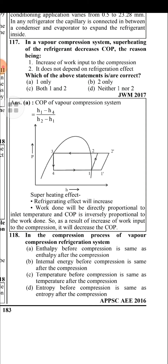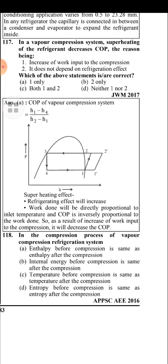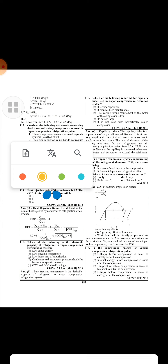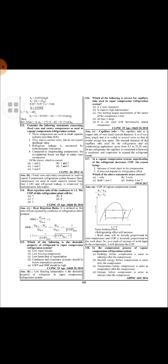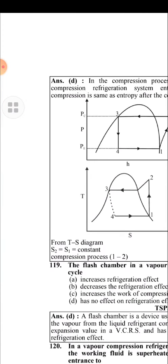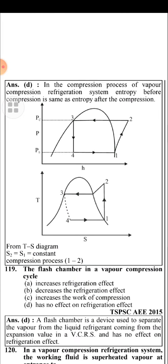The internal diameter of the capillary tube used for refrigeration and air conditioning applications varies from 0.5 to 2.28 mm. In any refrigerator, the capillary tube is connected between the condenser and evaporator to expand the refrigerant.